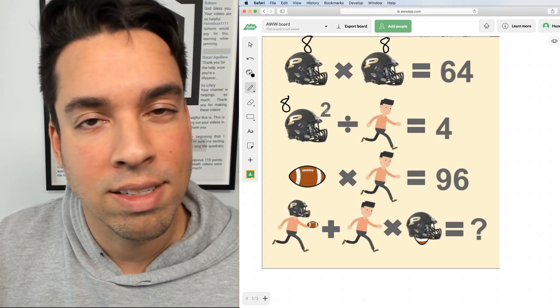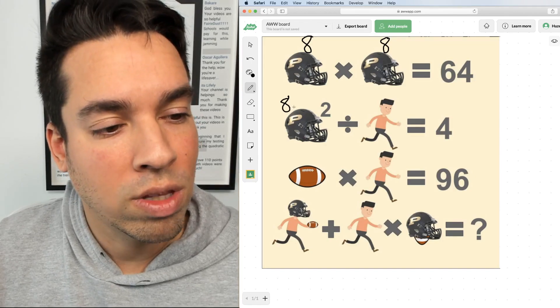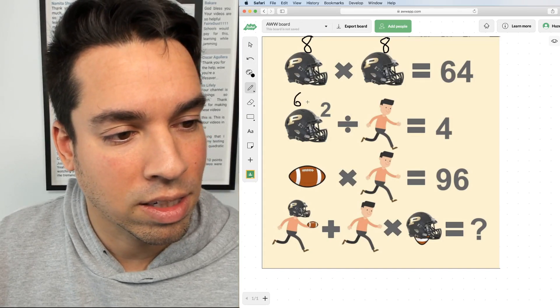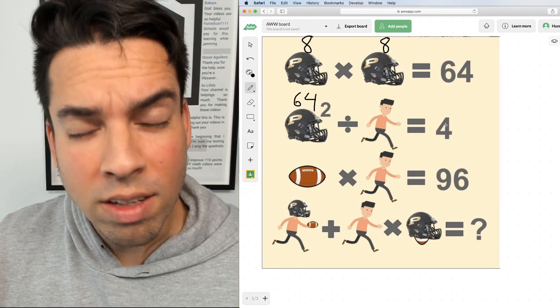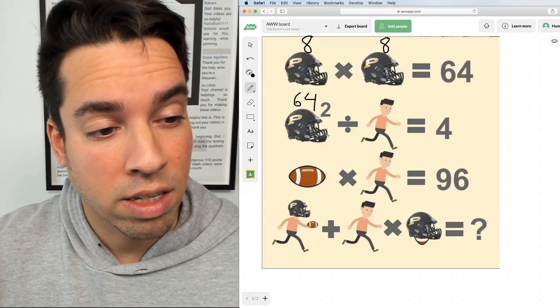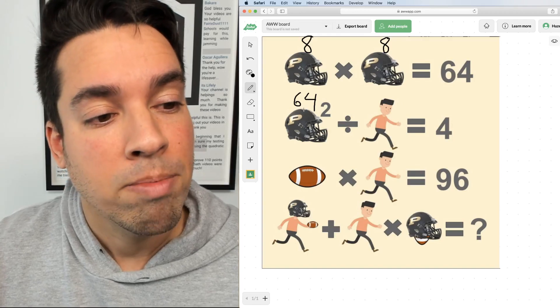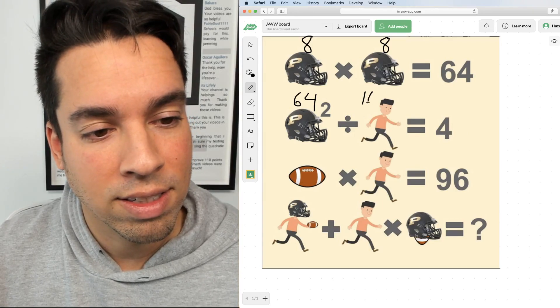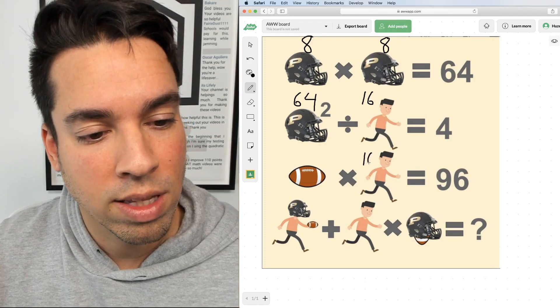So now I have 8 to the second power. What does that mean? Squared, to the second power. It means 8 times itself. So this figure right here is actually 8 times 8, which is 64. And then we're dividing 64 by some number to get 4. The question here is 64 divided by what number is 4, and you can figure that out by doing 64 divided by 4. 64 divided by 4 will give you that answer, which is actually 16. So 64 divided by 16 gives me 4. Now I know the man here is worth 16.